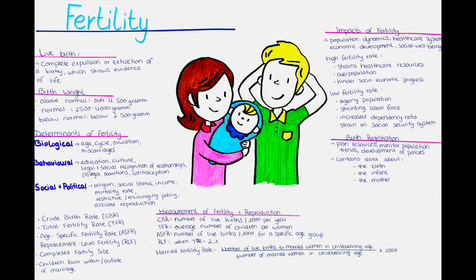Access to and utilization of contraception and birth control methods, together with their availability, affordability, and knowledge of various contraceptive options, enable individuals and couples to plan their pregnancies and control the timing and spacing of children. The prevalence and accessibility of safe and legal induced abortions can also influence fertility rates. In societies where access to abortion is restricted, unintended pregnancies may lead to higher fertility rates, while where safe abortion services are available, individuals have the option to control their fertility and family size.